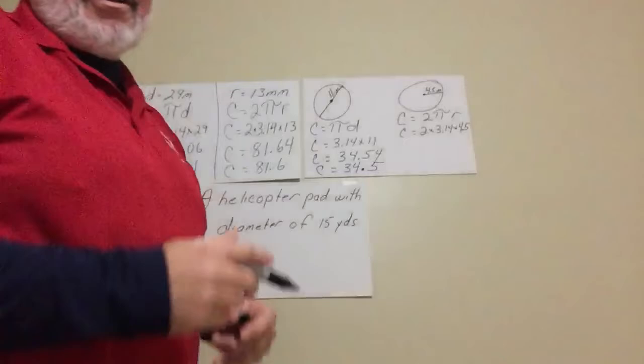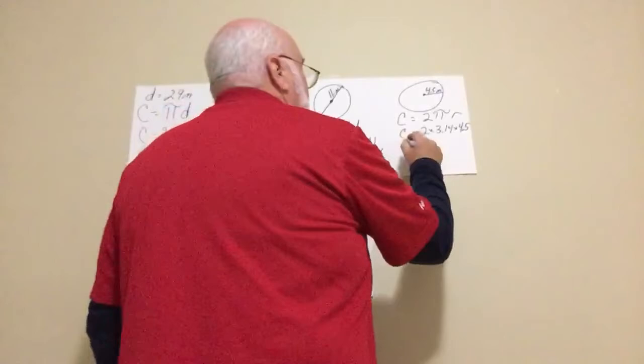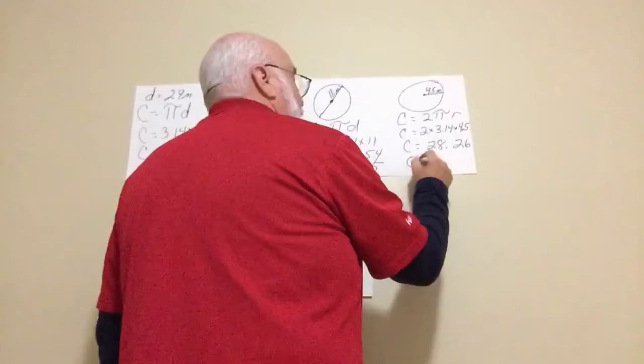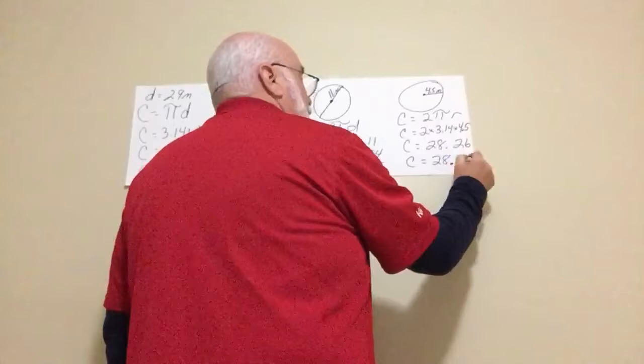And we have a calculator, so that comes out to, circumference equals 28, boy, my mind's, see I'm not in class and my mind's going crazy here, 0.26. We round, since the 6 is greater than 5, 28.3.